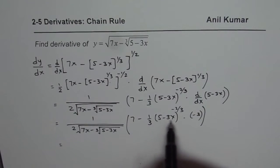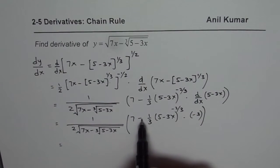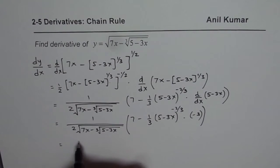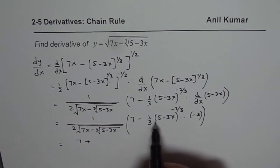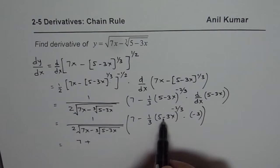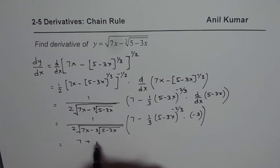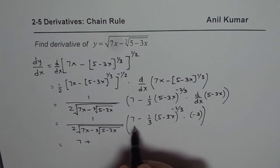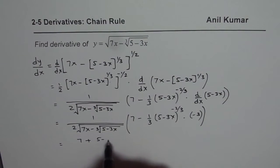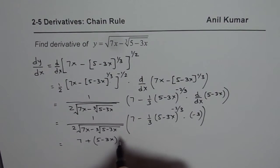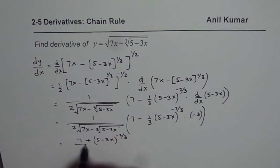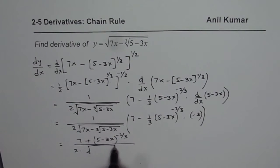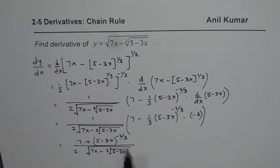So in the numerator, we have 3 and 3 cancel out. We get plus here. So we could write this as 7 plus, so on the numerator we have 7 plus (5 minus 3x)^(-2/3). So it is 7 minus minus minus is plus. We could write this as (5 minus 3x)^(-2/3) divided by 2 times square root of [7x minus cube root of (5 minus 3x)]. That is how we could actually simplify.